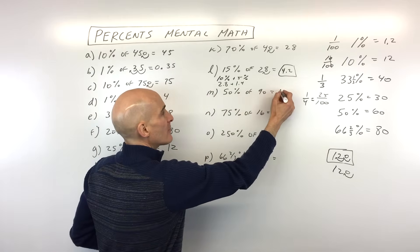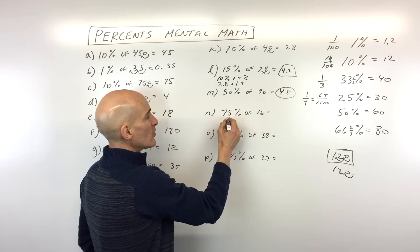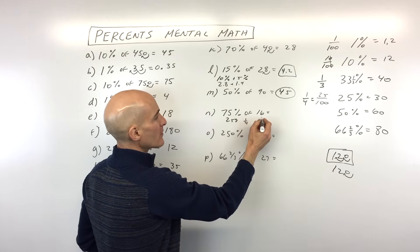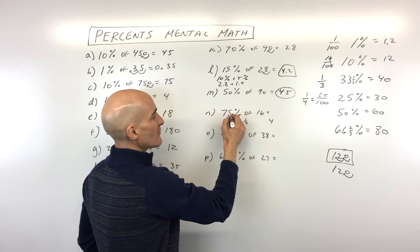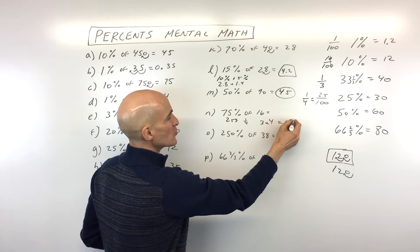50% we talked about was half. So half of 90 is 45. 75%, let's find out what 25% is. That's like dividing by 4. That's like 1 fourth. So that's going to be 4. And 75% is 3 times 25%. So 3 times 4 is 12.